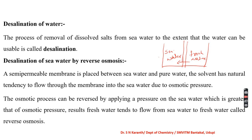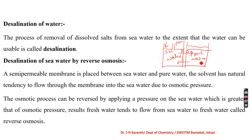However, this direction can be reversed by applying a pressure greater than the osmotic pressure of the sea water. When such pressure is applied, fresh water from the sea water side tends to flow through the membrane toward the fresh water side. The volume on the fresh water side increases, and we can collect fresh water. This process is called reverse osmosis.